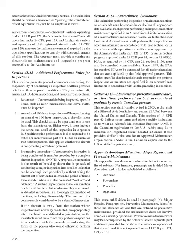Specific engine performance is also required to be tested or monitored as part of RTS for an annual or 100-hour inspection, whether the aircraft is reciprocating or turbine-powered. A progressive inspection must be preceded by a complete aircraft inspection. A routine inspection is a visual examination or check of the item requiring no disassembly; a detailed inspection is a thorough examination including disassembly. The overhaul of a component is considered a detailed inspection. If the aircraft is away from the station where inspections are normally conducted, an appropriately rated mechanic, a certificated repair station, or the manufacturer may perform inspections using the forms of the person who would otherwise perform the inspection.